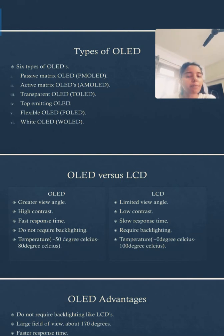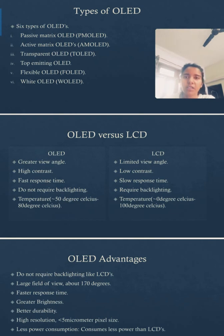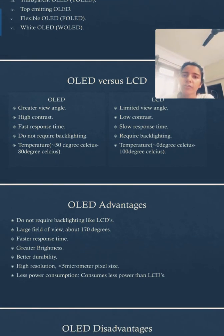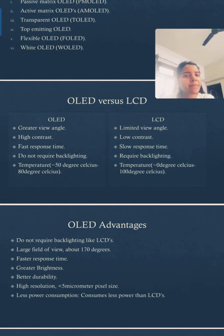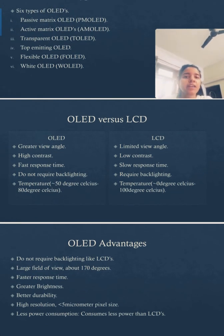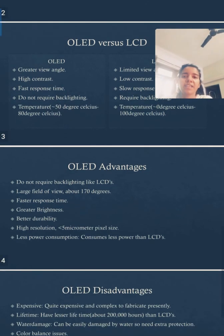Comparing OLEDs with LCDs: OLEDs have a greater viewing angle than LCDs. OLEDs have high contrast, whereas LCDs have low contrast. OLEDs have a fast response time, while LCDs have a slow response time. OLEDs do not require backlighting, whereas LCDs require backlighting. OLEDs operate at temperatures from -50°C to 80°C, whereas LCDs operate from approximately 0°C to 100°C. OLED stands for Organic Light Emitting Diode, whereas LCD stands for Liquid Crystal Display.